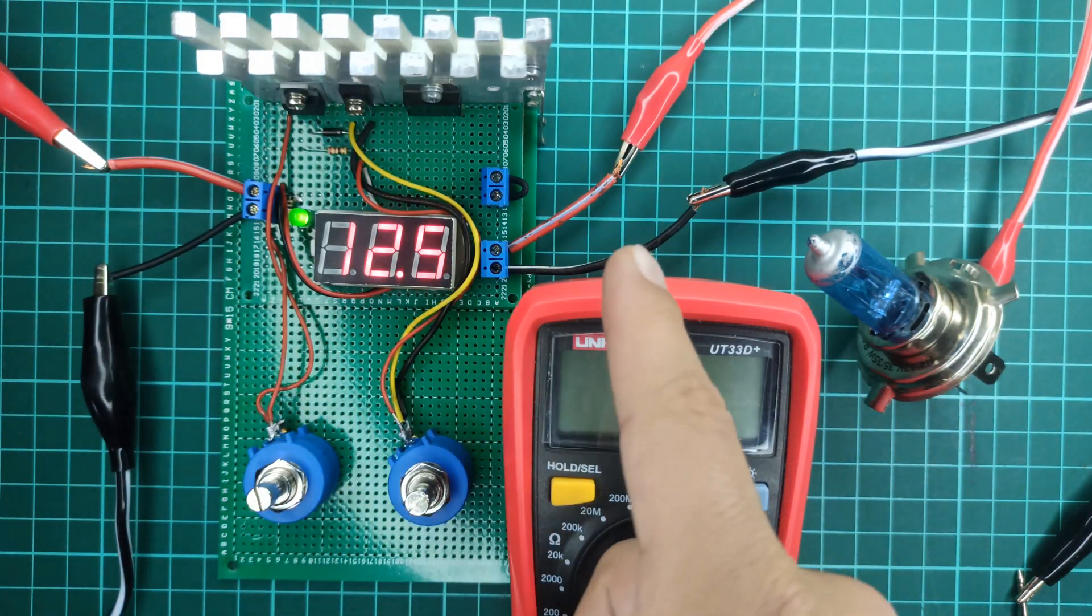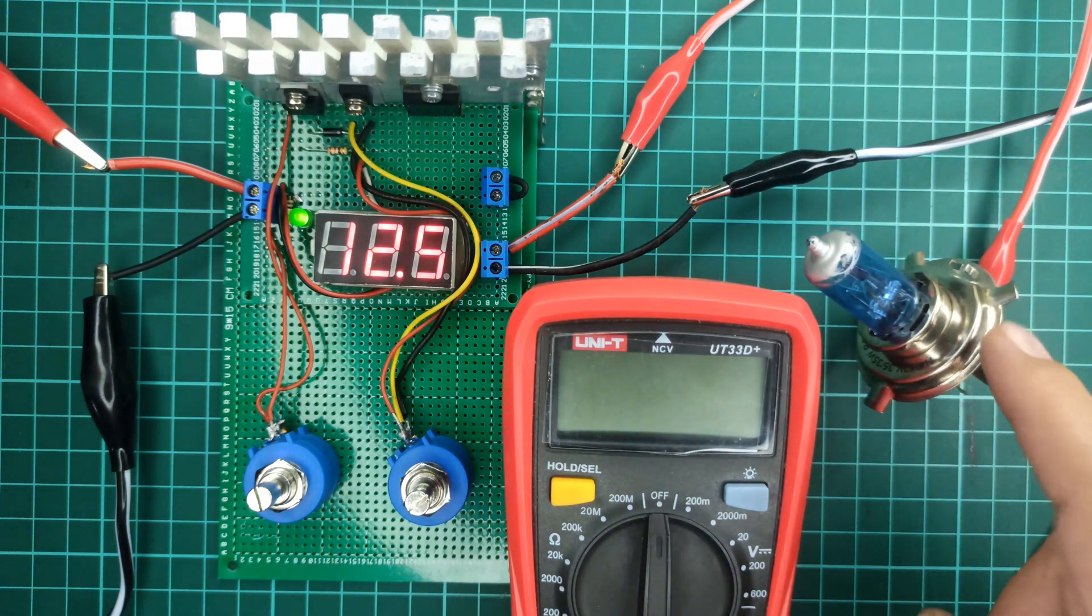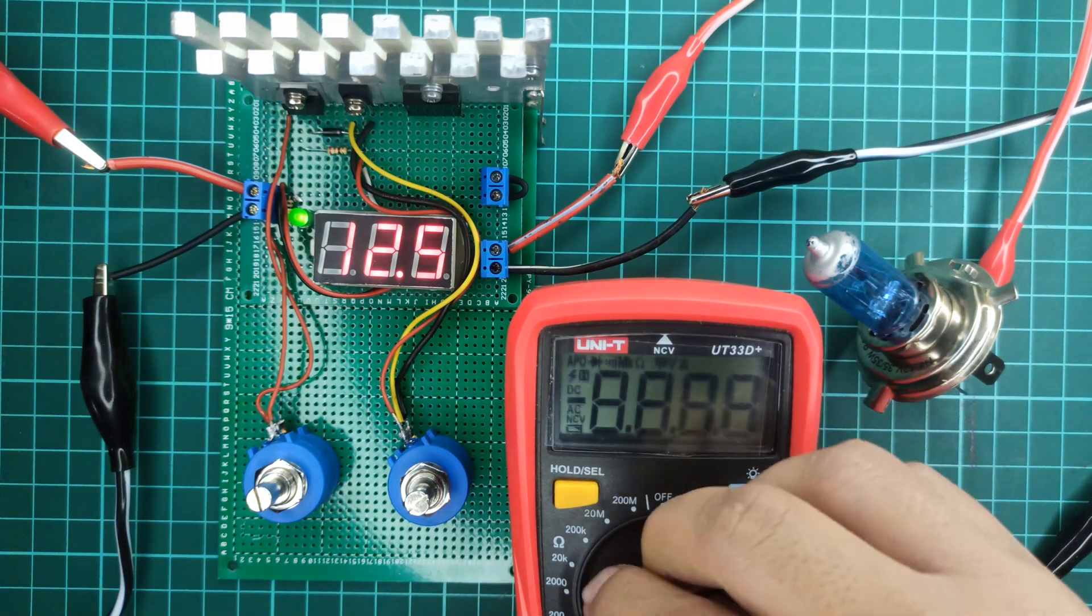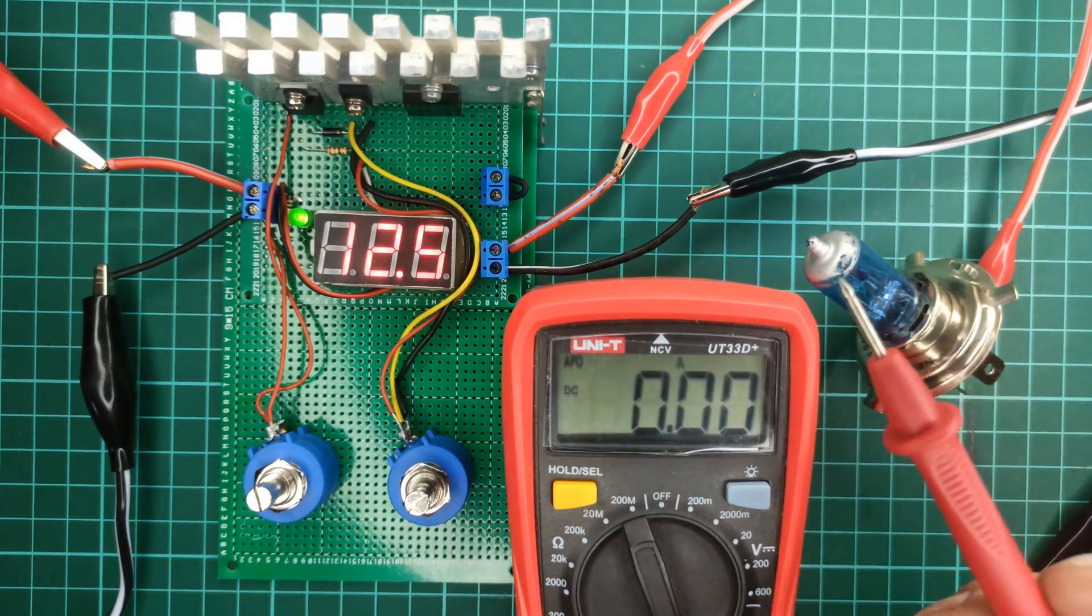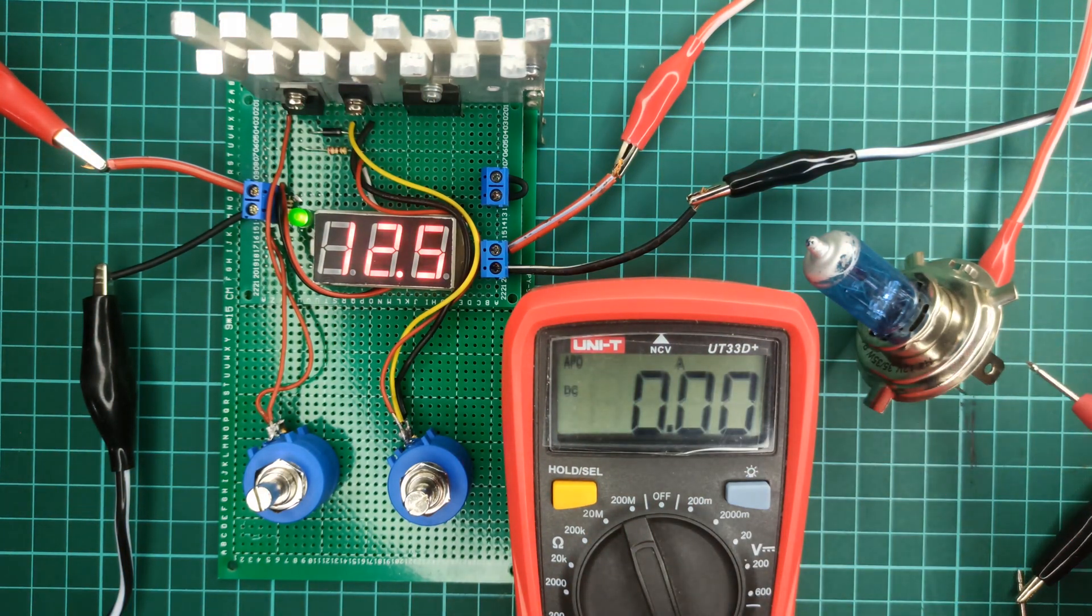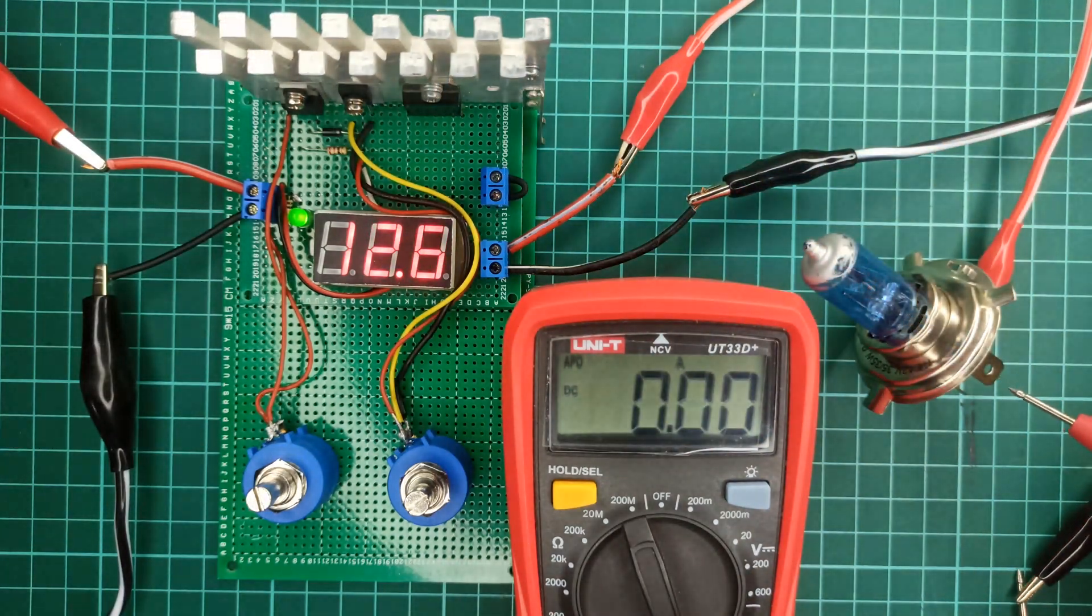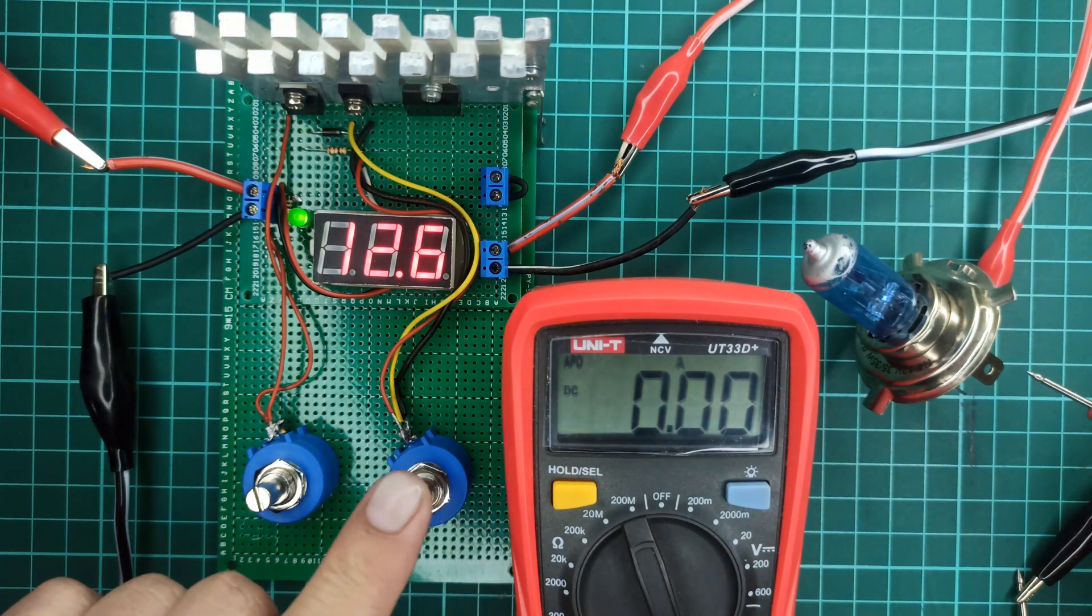The input is connected to a 24 volts 20 ampere SMPS and the output is connected to a light bulb in series with an ampere meter. Here you can see that the load is drawing around 2.4 amperes current at 12 volts, which can be adjusted using the current potentiometer.